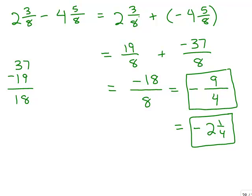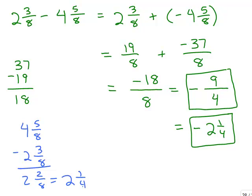This same problem could have been done keeping everything as mixed numbers. You're adding a positive and a negative, and you know the final answer would be negative, so you subtract. When adding numbers with different signs, you take their difference. I would take 4 and 5 eighths minus 2 and 3 eighths, which is 2 and 2 eighths, reducing to 2 and 1 fourth. Because there are more negatives, you put the negative sign in front, getting negative 2 and 1 fourth. Either method works.